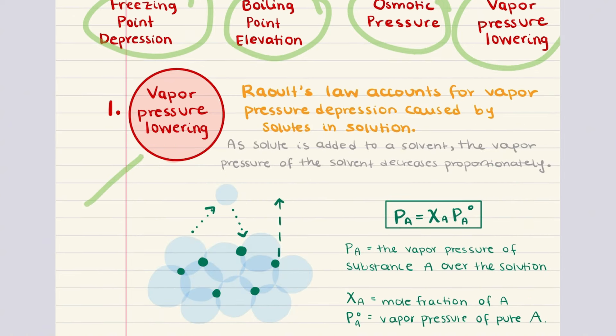Now we're going to start with discussing vapor pressure lowering and defining Raoult's law. Raoult's law describes the vapor pressure lowering of a solvent when a non-volatile solute is dissolved in it. According to Raoult's law, the vapor pressure of the solvent in a solution is directly proportional to the mole fraction of the solvent. The addition of a solute reduces the vapor pressure because solute particles occupy some of the surface area, reducing the number of solvent molecules that can escape into the vapor phase.